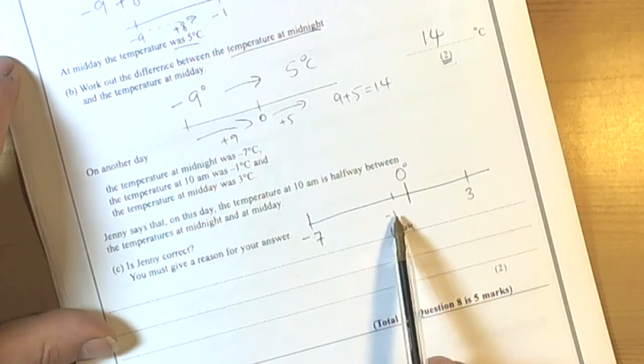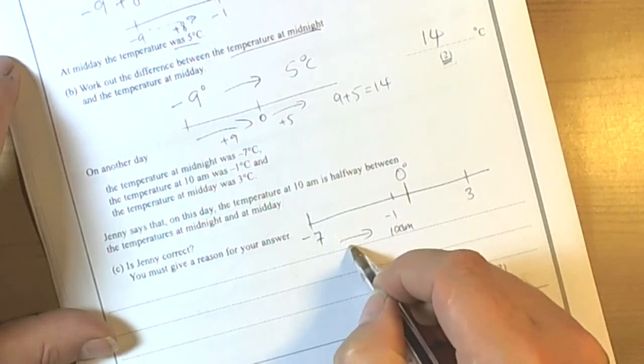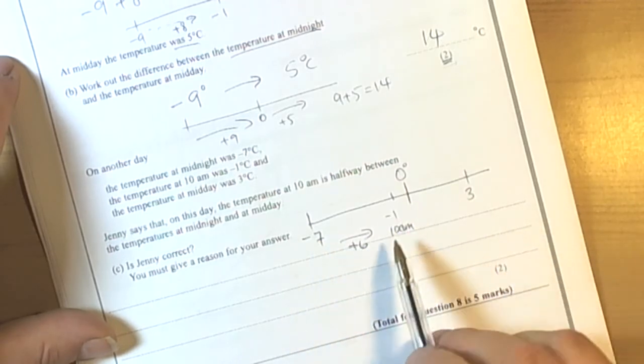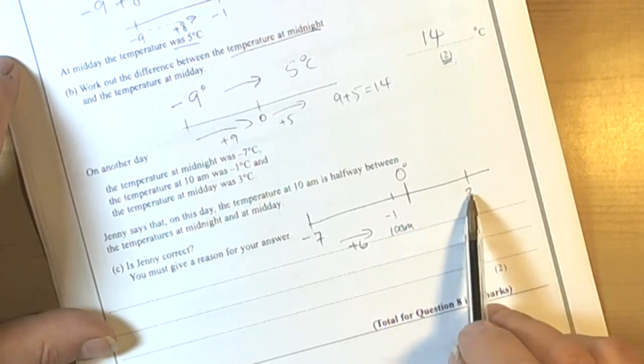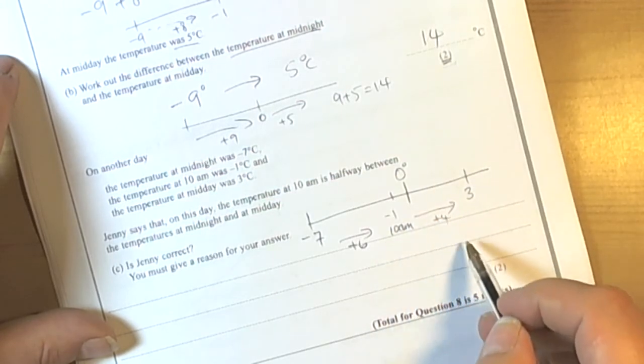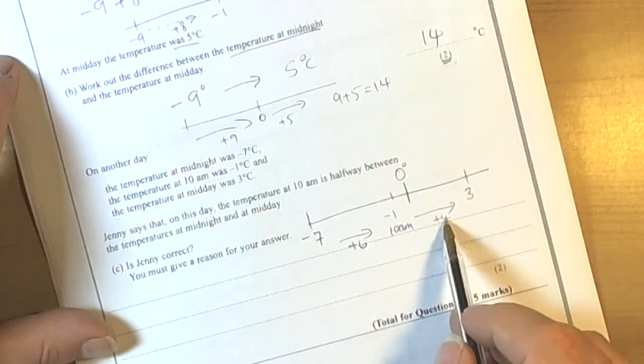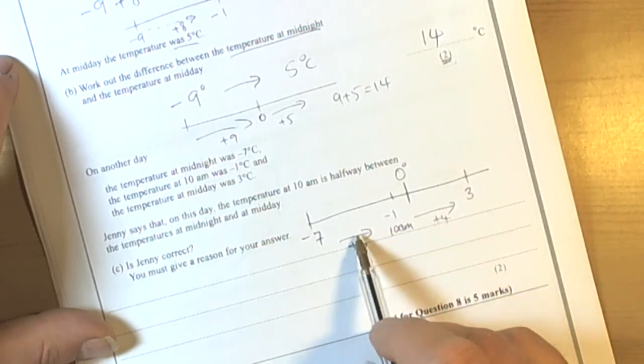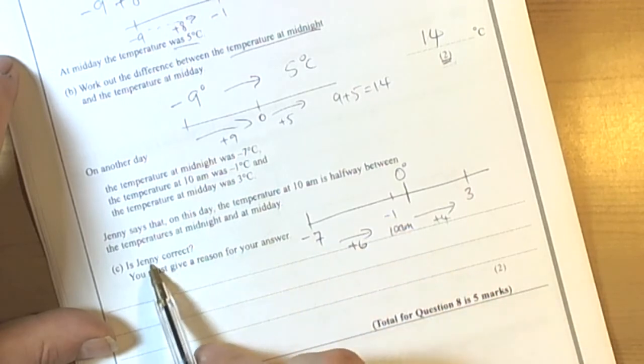Minus 7 to get to minus 1 we'd have to plus 6. And then to get from minus 1 to 3 we would have to plus 4. Well that's not halfway is it? Because those should be the same if it was exactly halfway. So it looks like that's not correct.